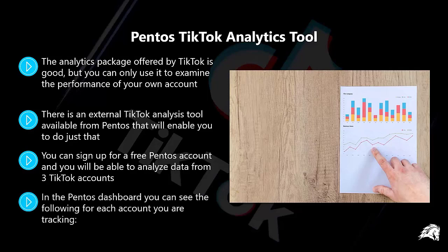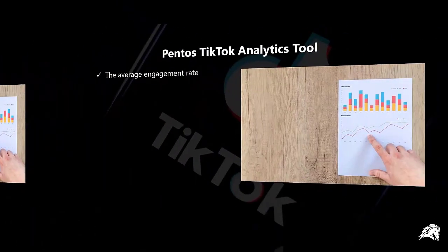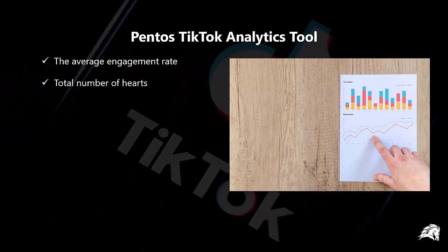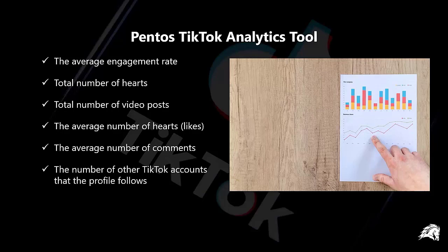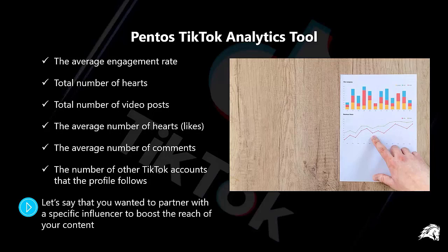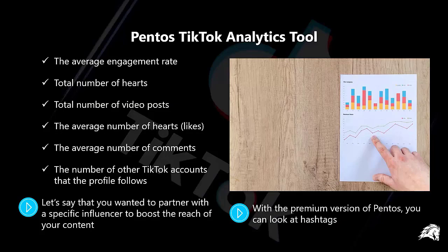In the Pentos dashboard, you can see the following for each account you are tracking: the average engagement rate, total number of hearts, total number of video posts, the average number of hearts or likes, the average number of comments, and the number of other TikTok accounts that the profile follows. For example, if you wanted to partner with a specific influencer to boost the reach of your content, you can use Pentos to see what their average engagement rate is, which will help with decision making. With the premium version of Pentos, you can also look at hashtags.